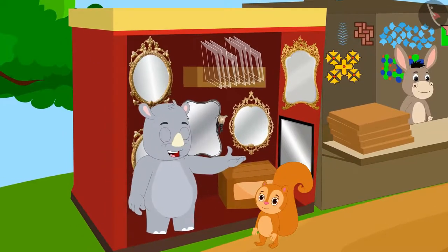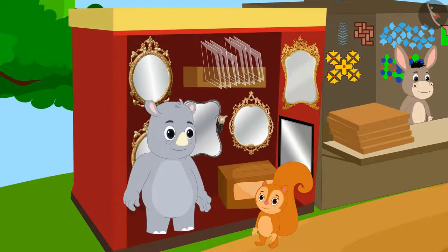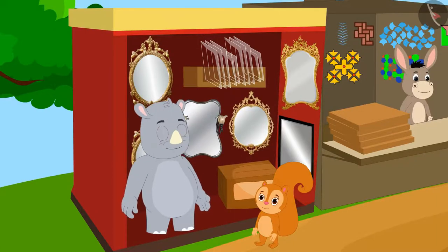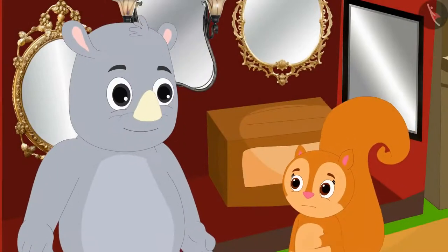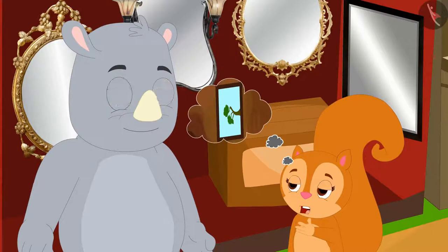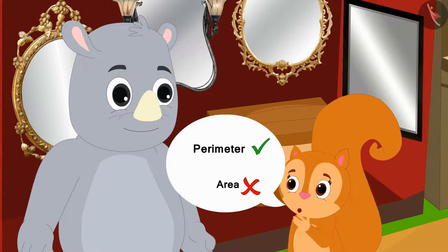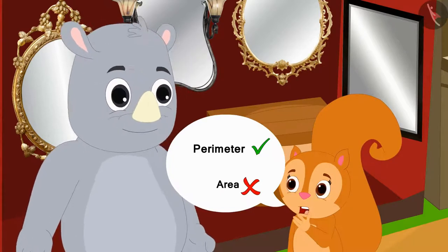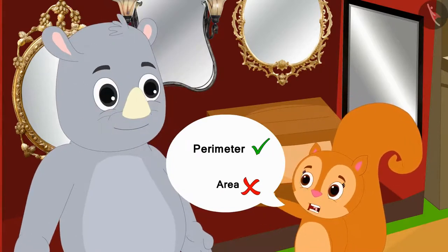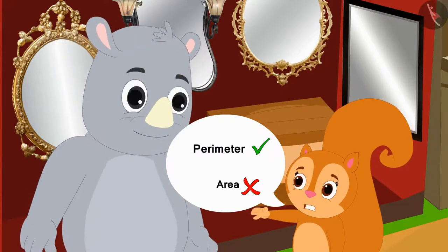Chanda, why do you look so upset? Gaggoo asked Chanda. Gaggoo, I want to buy a glass for my rectangle shaped window. I remember the perimeter of the frame of my window and also the length of the window, but I do not know the area of glass I need for the window.